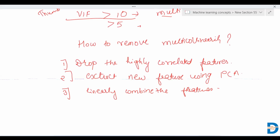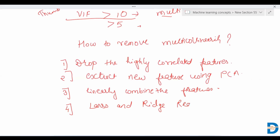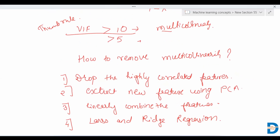Third, you can linearly combine the features — for example, adding or summing two features together. Fourth, you can use Lasso and Ridge regression. With the help of these regression techniques, you can also remove multicollinearity in your data. That's all about how to deal with multicollinearity. Thank you, bye.